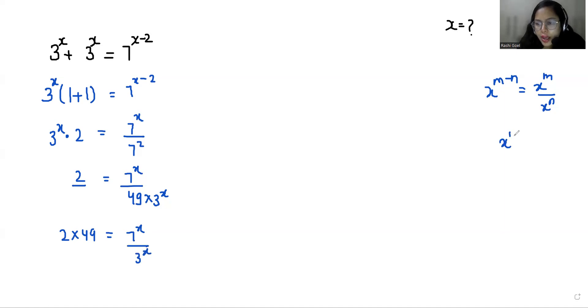According to exponent rule x power m by y power m we can write it as x by y whole power m. So it becomes 7 by 3 power x equals 2 times 49 which is 98.